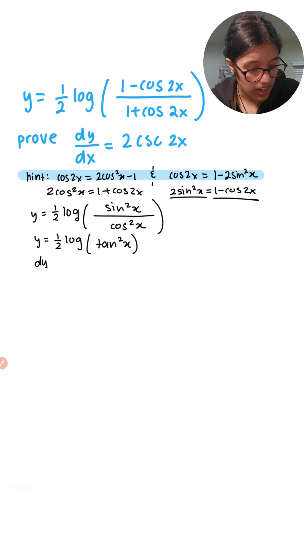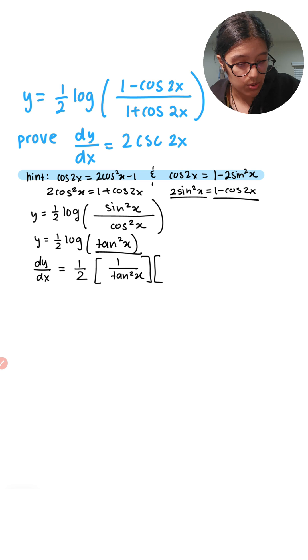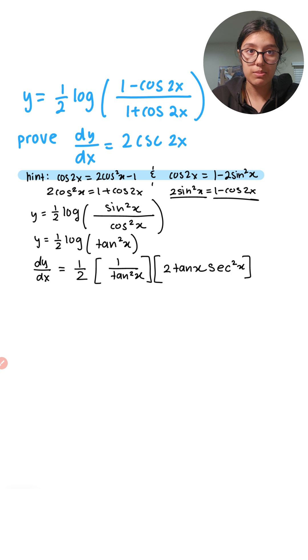We know we need to apply chain rule, so we have dy over dx is equal to one half, that is a constant. Chain rule for this part right over there, and that is 1 over tan squared x, and multiply that by the derivative of tan squared x, which is going to be 2 tan x. Chain rule over here again, secant squared x. Let's simplify this.